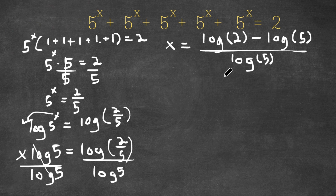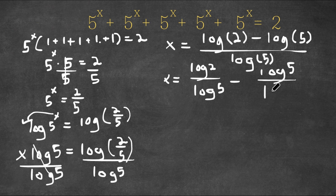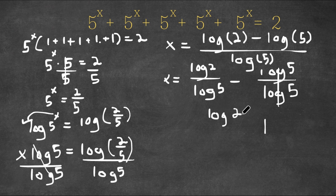I can rewrite this as log 2 over log 5, minus log 5 over log 5. Now log 5 over log 5, these two cancel out and it's simply just 1. So we get log 2 over log 5, minus 1.